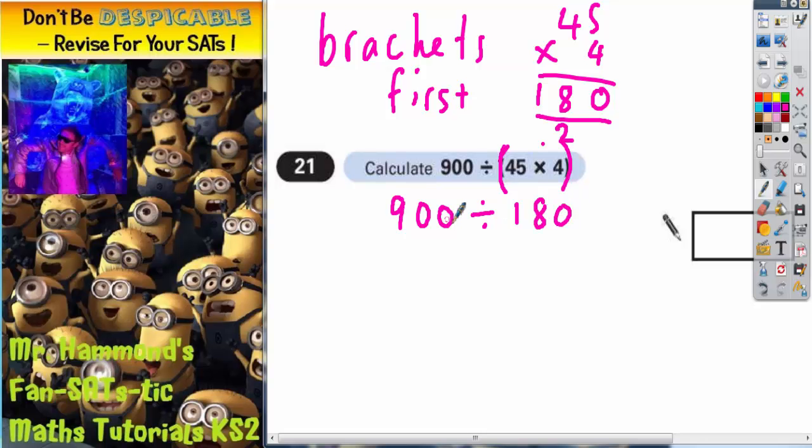How many 180s make 900? Now the easiest thing to do here is count up in 180s until we get to 900. And actually what we could do is count up in 18s and just add a 0 on the end.